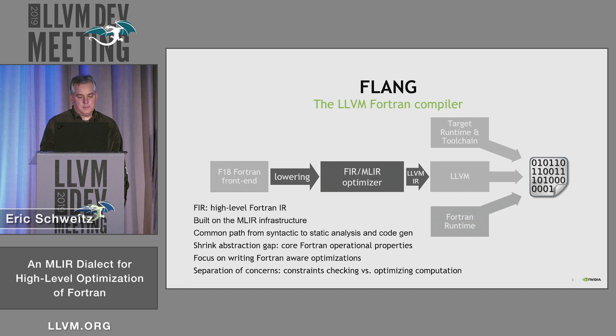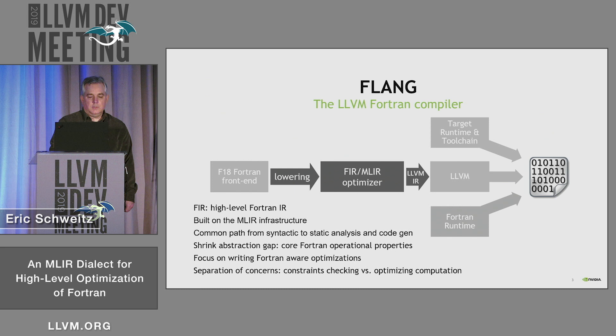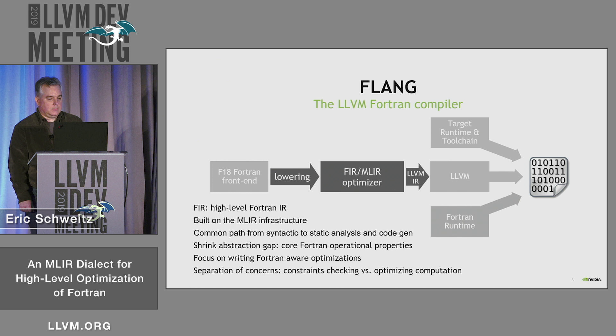This talk is about the Fortran IR, which is the middle end — the middle part shown in dark gray. It's a high-level Fortran IR built on top of MLIR, using MLIR as the infrastructure. We want a common path from parsing and semantics analysis to doing static analysis and code gen — a common path to our optimizer.